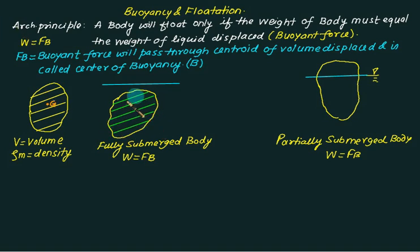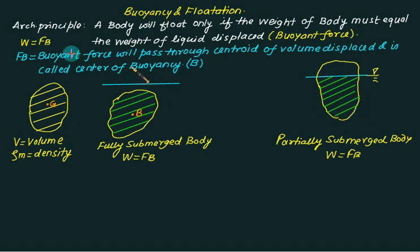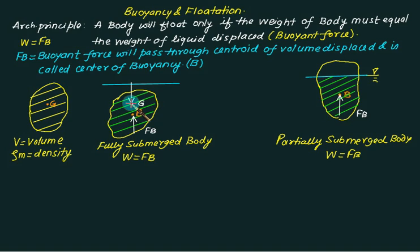The green hatched region indicates the displaced volume, which for a fully submerged body equals the total volume of the body. G represents the center of gravity through which the weight acts, and B represents the center of buoyancy through which the buoyant force acts vertically upward. The portion below the free surface is the displaced volume, and the centroid of this hatched area is the center of buoyancy. The weight acts vertically downward through G, while the buoyant force acts vertically upward through B.